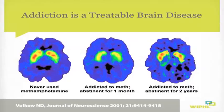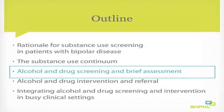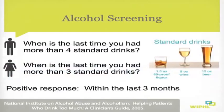Since addiction is clearly a disease of the brain and the number one risk factor is genetics, we should take special care to show compassion to patients with addiction rather than judge them harshly. It's very important to identify where each patient lies on the continuum of substance use because their category dictates appropriate clinical management. Patients with dependent symptoms should be referred for treatment, while those with mild to moderate risk can respond to brief interventions delivered in the general healthcare setting.